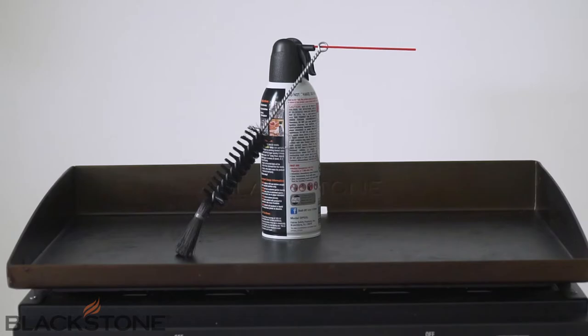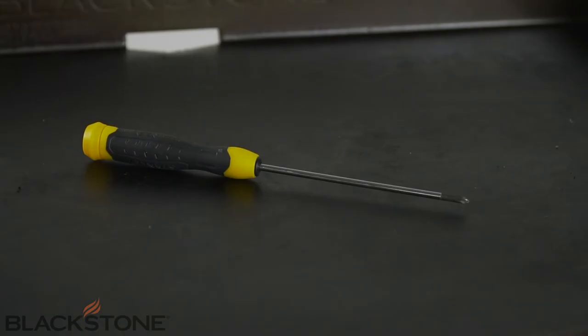To fix this, you will need either a bottle brush or a can of compressed air. You will also need a Phillips screwdriver to help you remove the burner tube.